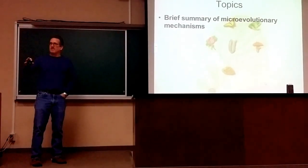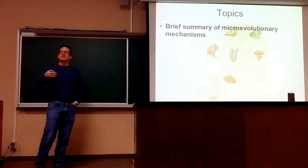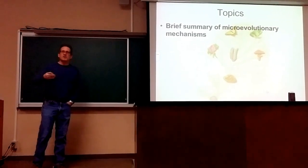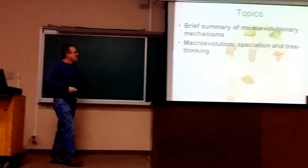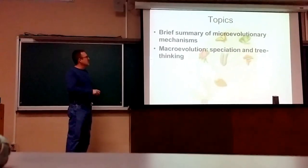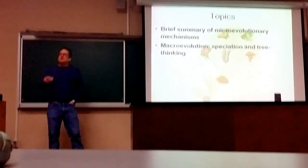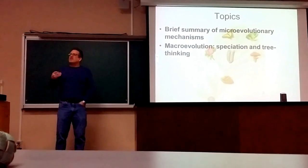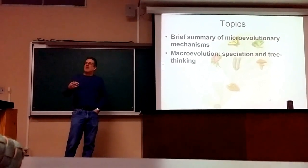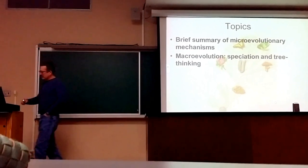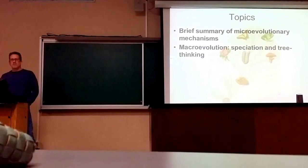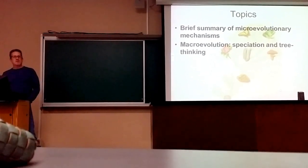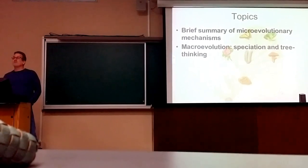Macroevolution was accepted, and now it tends to be the reverse. Even most creationists will accept microevolution, but it's the next phase that they have problems with — macroevolution. This is where we're looking at speciation, and I want to introduce you to the idea of tree thinking, using phylogenies to represent macroevolutionary patterns, which is really one of the biggest things that people who don't understand evolution are confused about.